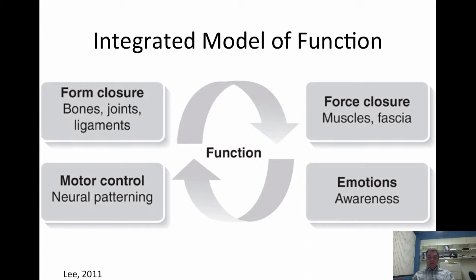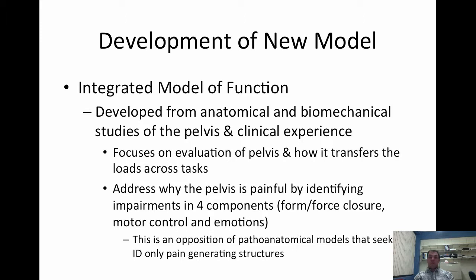This model really looks at how the pelvis handles and transfers load across meaningful tasks. The model is developed from anatomical and biomechanical studies of the pelvis and Lee's own clinical experience working with pelvic girdle patients. It addresses why the pelvis is painful by identifying impairments in one of those four components — form closure, force closure, motor control, or emotions — or maybe a combination. This is in direct opposition to pathoanatomical models that seek to identify pain only by the generating structures.